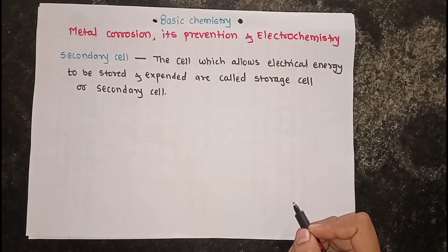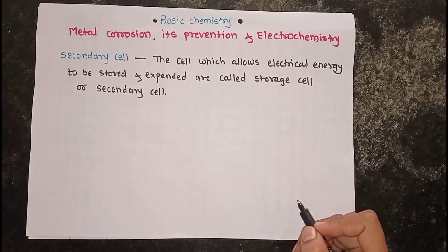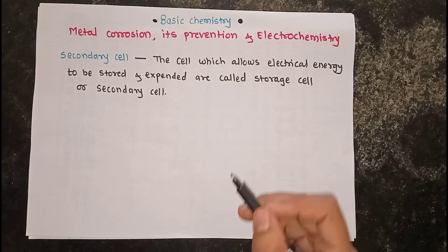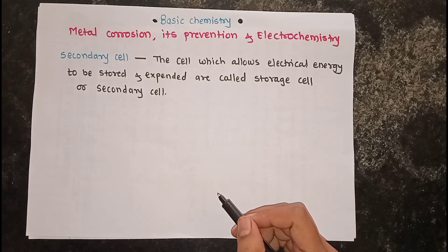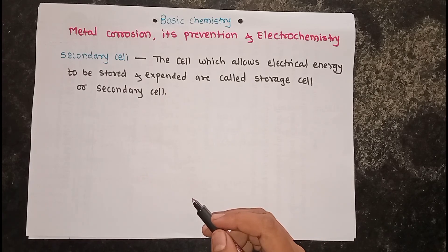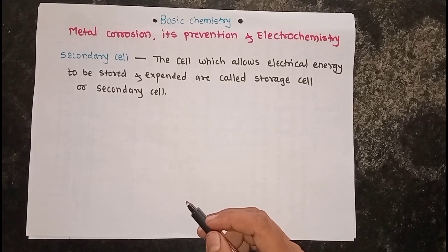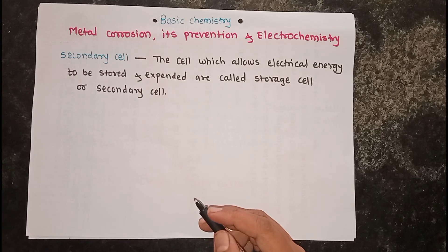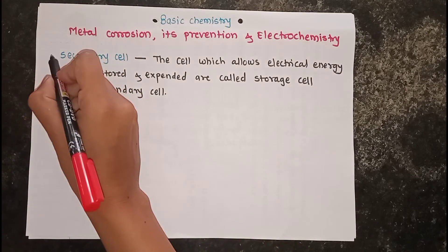Welcome back to the basic chemistry course. In the previous session, we discussed metal corrosion, its prevention, and electrochemistry. We also covered primary cells — one type of electrochemical cell — including the Daniel cell, its construction, working, reactions, and applications. In today's session, we are going to discuss another type of electrochemical cell: the secondary cell.